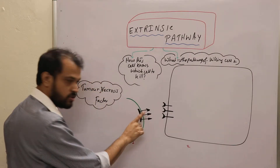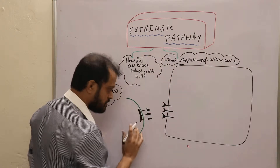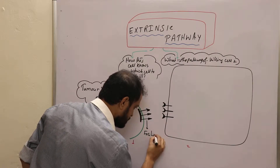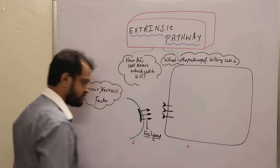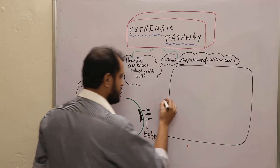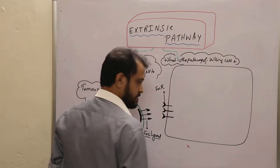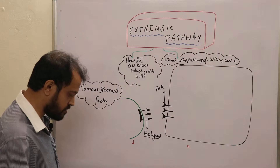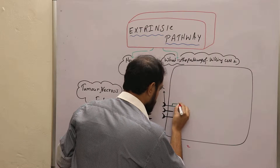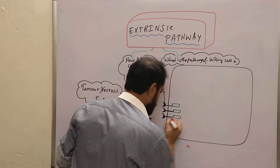The protein which actually triggers the extrinsic pathway is called FAS ligand, and the receptors which receive this FAS ligand are known as FAS receptors. FAS receptors have a domain.